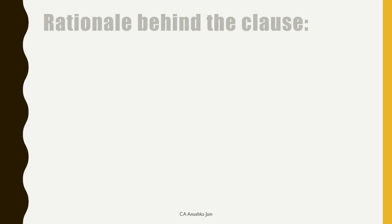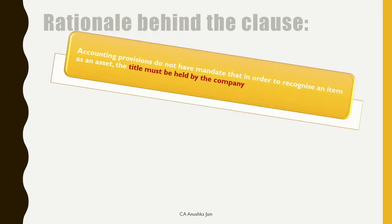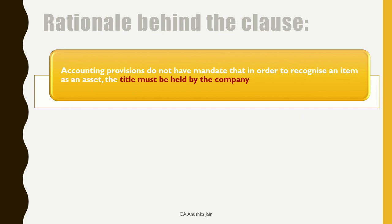This clause can be found in two reasons. One is that accounting standards do not require that in order to recognize an item as an asset, title company ke paas hi hona padega. AS10 simply kehta hai that property, plant and equipment are held for use in the production or supply of goods or services, for rental to others, or for administrative purposes, and are expected to be used during more than a period of 12 months. Evidently, there is no mandate for PPE to be in the company's name. Iska fayda promoters utha sakte hai — for example, by retaining title over company's property during conversion of firms into companies, they may sell off properties and vanish. CARO mandates disclosures on title details of all immovable properties, thus notifying the public at large about the true ownership.